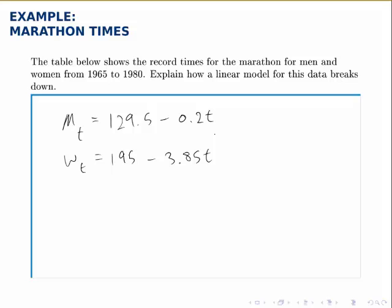What's wrong with these models though? They look perfectly fine so far. The problem is that these models predict that the women's record would beat the men's record by 1985. In 1985, the men's record was still 14 minutes faster than the women's.